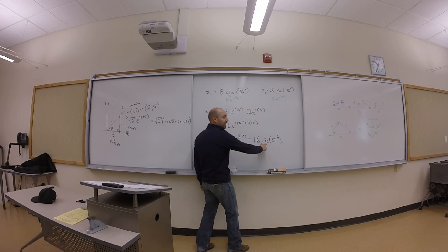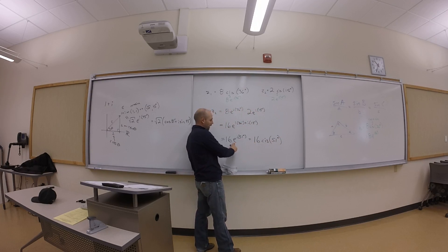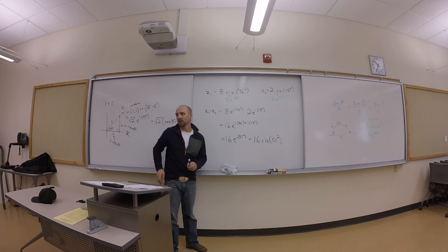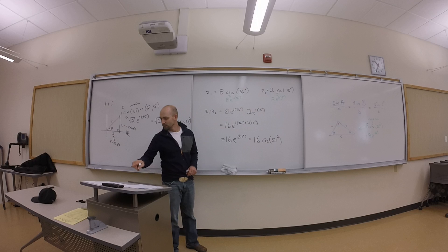So this cis thing, right, is really just shorthand for e to the i, whatever the angle is. Right. It's cosine plus i sine done to whatever angle is in there. So should we try another one?